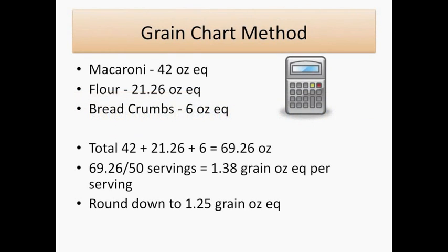Remember that there are different ways to credit pasta. If we had used the updated grain chart instead of the food buying guide, the grain chart states that 1 ounce of dry pasta equals 1 grain ounce equivalent. In that case, pasta would account for 42 grain ounce equivalents and this recipe would change to 1.25 grain ounce equivalents per serving. As long as you document the method that you use for crediting and stay consistent, you can use either method.